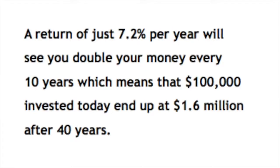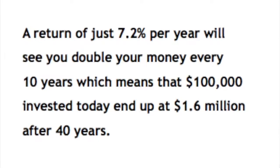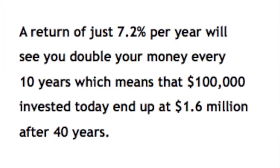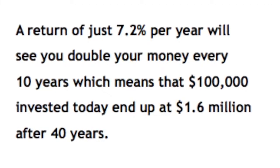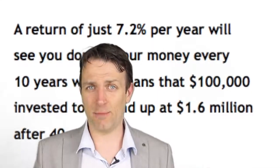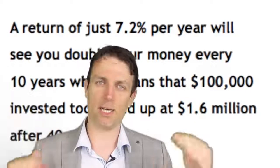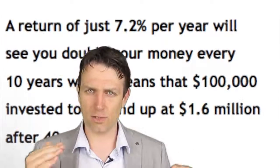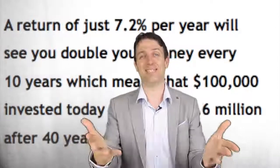If you don't have the time to be an aggressive investor, Graham gives you good, everlasting tips to make investing easy. A return of 7.2% per year will double your money every 10 years, meaning $100,000 invested today will grow to $1.6 million after 40 years. That's enough for a cozy retirement. If you're defensive and follow Graham's rules, you can reach that 7.2% per year — a little higher or lower — but roughly 7% is what the stock market has historically delivered. Thank you for watching, and I'll see you in the next video.